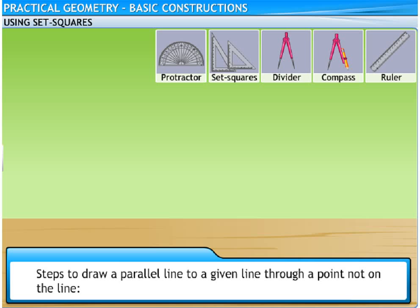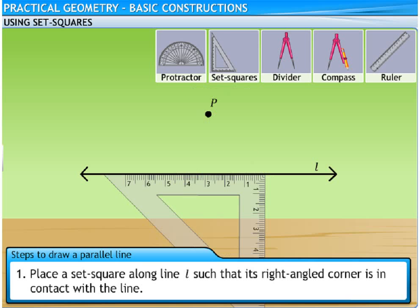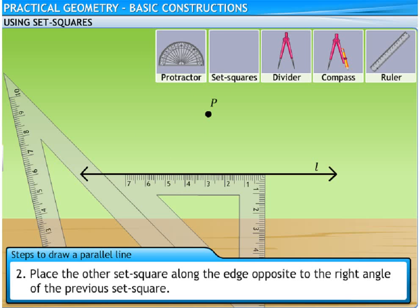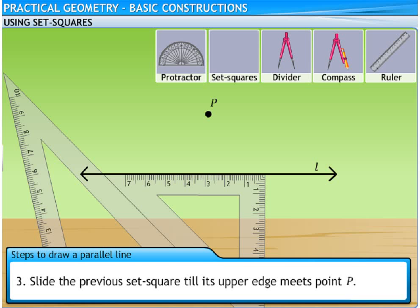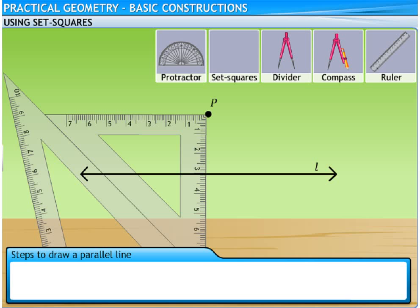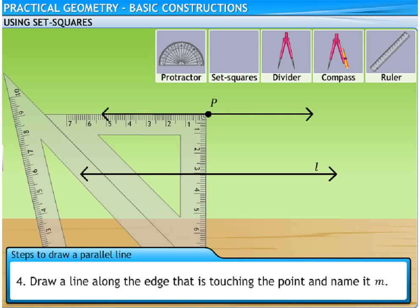Next, we'll draw a parallel line to a given line through a point not on the line. Here, L is a line and P is a point not on the line. Place a set square along line L such that its right angled corner is in contact with the line. Place the other set square along the edge opposite to the right angle of the first set square; a ruler can also be used instead. Without changing the position of the second set square, slide the first set square along its edge till it meets point P. Finally, draw a line along the edge touching point P and name it M. Line M is the required parallel line to line L.